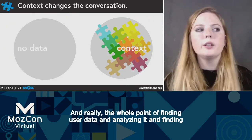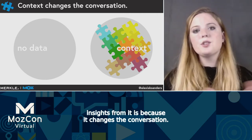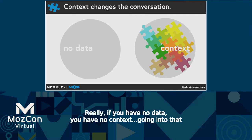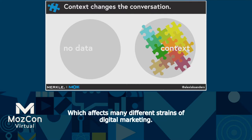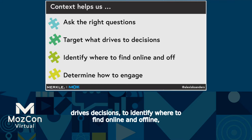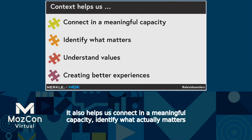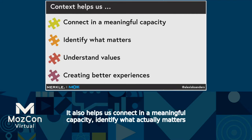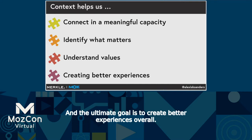The whole point of finding user data and analyzing it is because it changes the conversation. If you have no data, you have no context, and going into that conversation blind can be much more challenging — which affects many different streams of digital marketing. Context helps us to ask the right questions, to target what drives decisions, to identify where to find people online and offline, and determine how to ultimately engage. It also helps us connect in a meaningful capacity, identify what actually matters to people, understand their values, and the ultimate goal is to create better experiences overall.